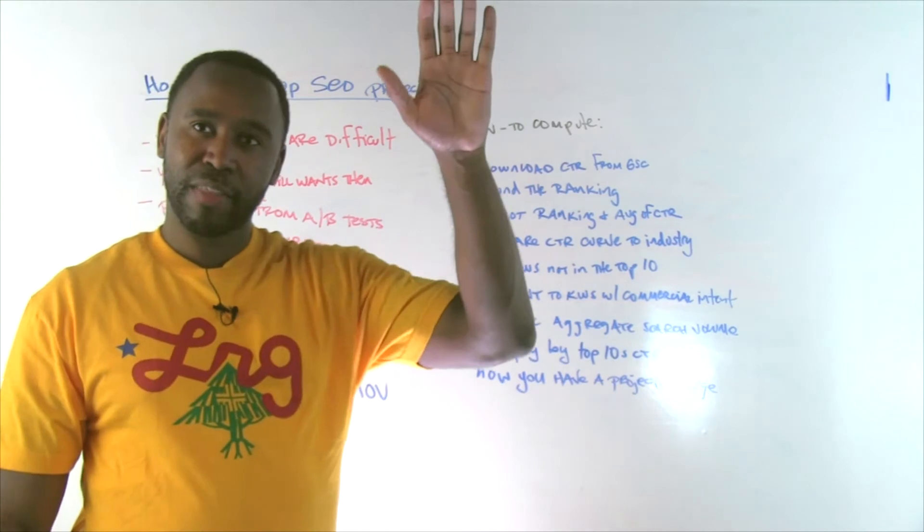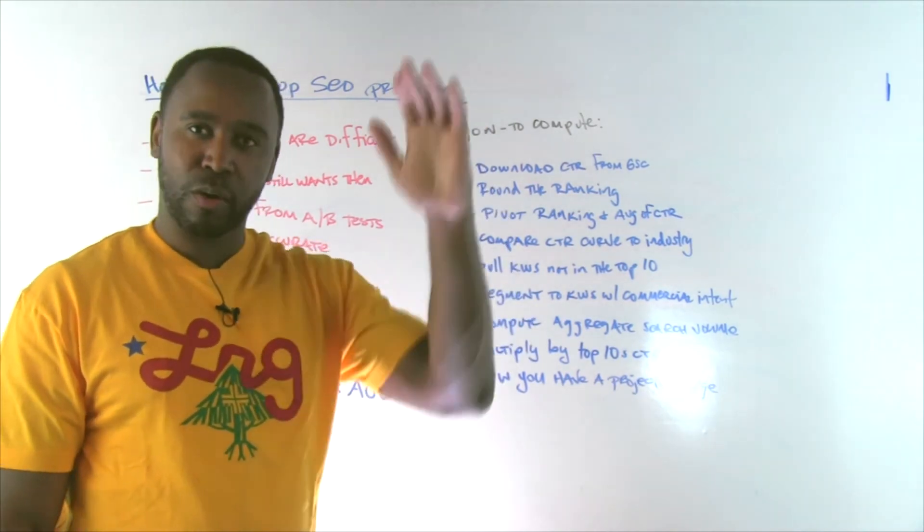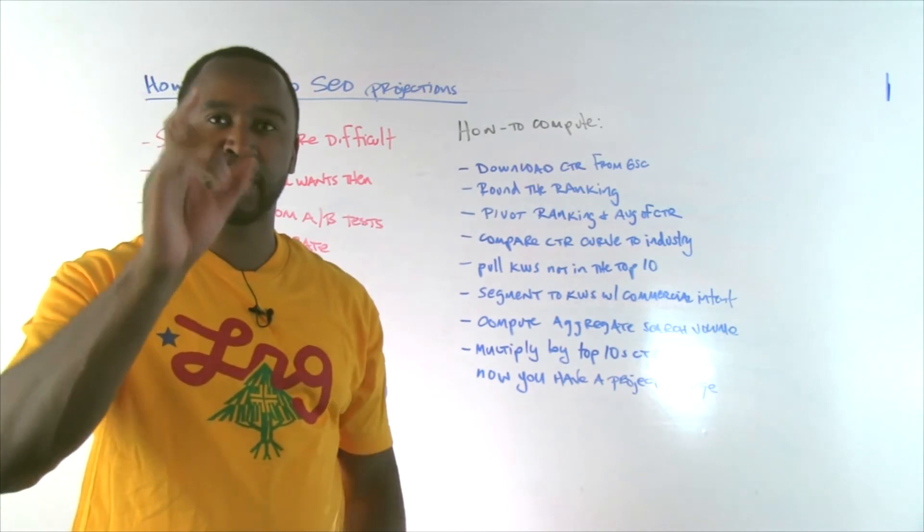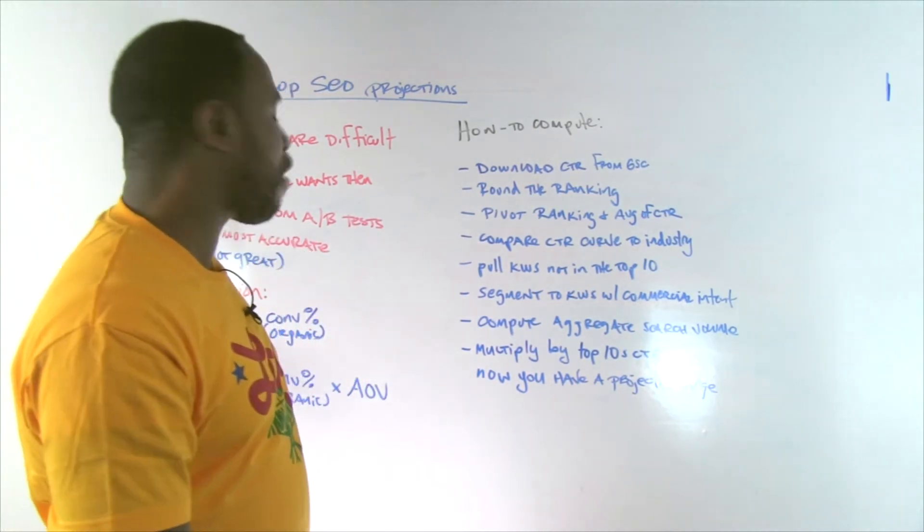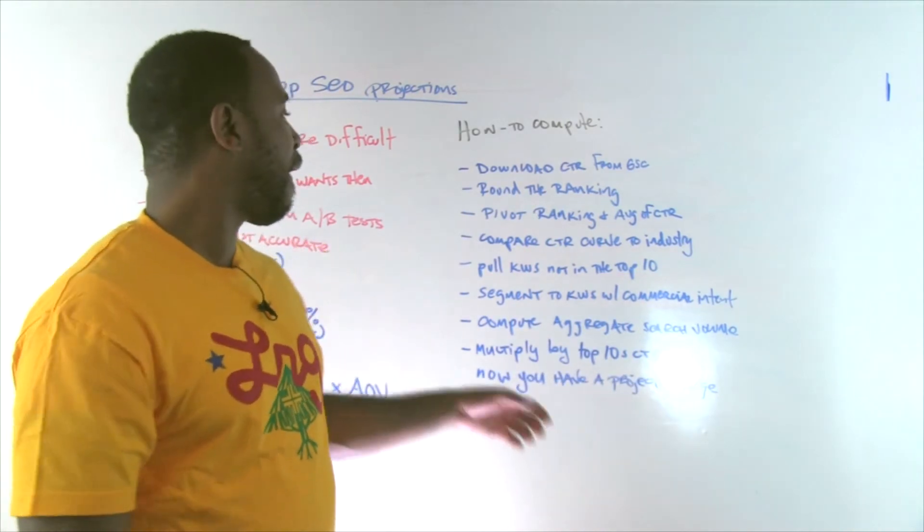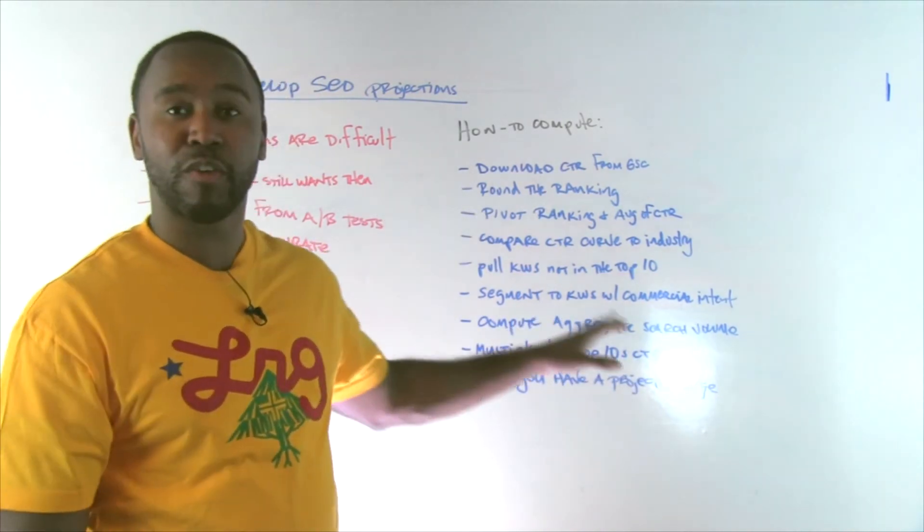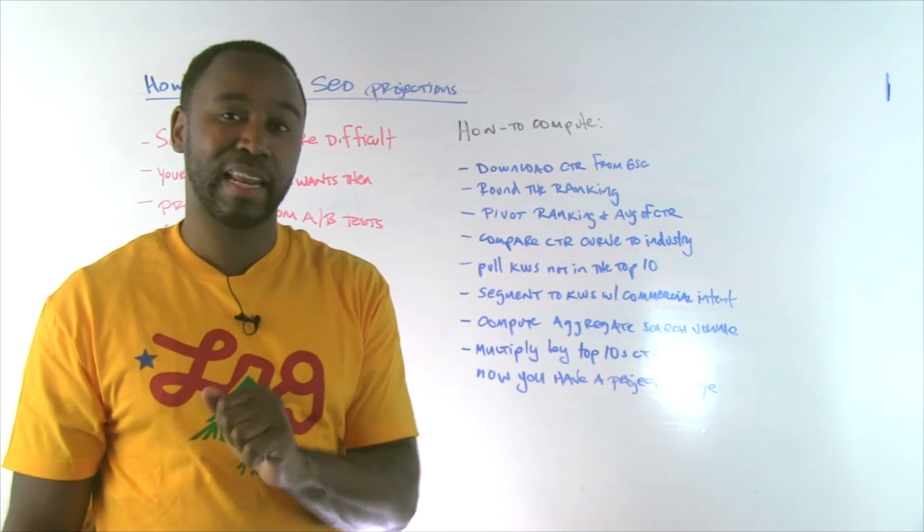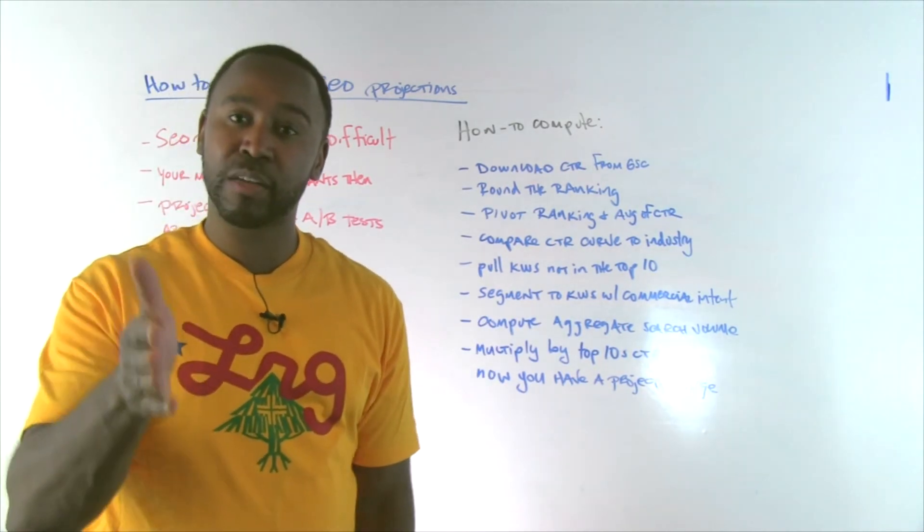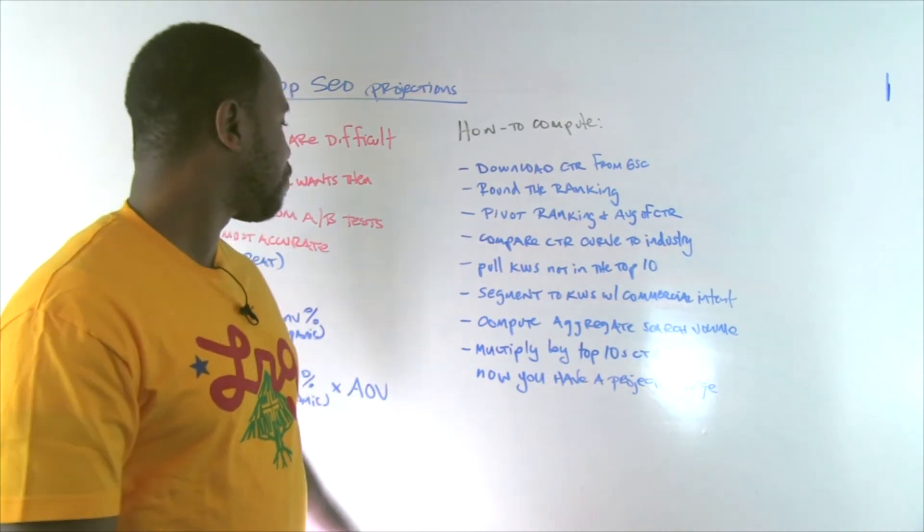Then go down that whole model that you built, that whole CTR curve. So for number one position, like I said, it might be 40%. Multiply that. Build that whole equation that we just talked about using that search volume number and then also that conversion rate specifically from organic search. You don't want the whole site from all channel conversion rate. You specifically want it from organic search. And at that point, you now have a range for what your projections would be.